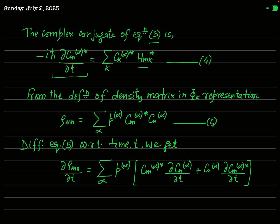As you have already studied the density matrix in the previous lecture, the basic definition of the density matrix in the φ_k representation is: ρ_mn = Σ_α p_α c_m^α* c_n^α, where p_α represents the probability of a particular state represented by the ket vector alpha. Now we will differentiate this equation with respect to time t, since our aim is to know the time dependence of this density matrix.